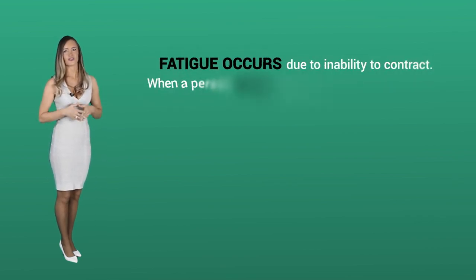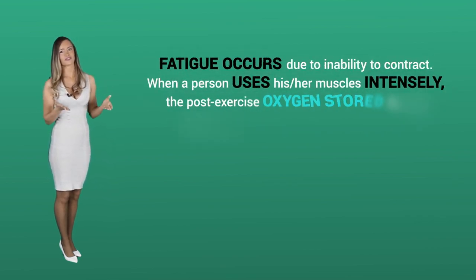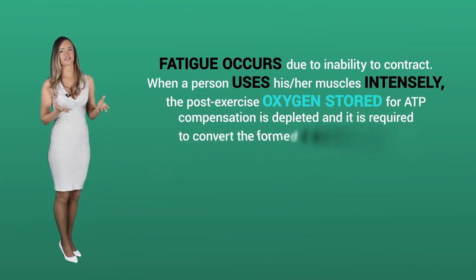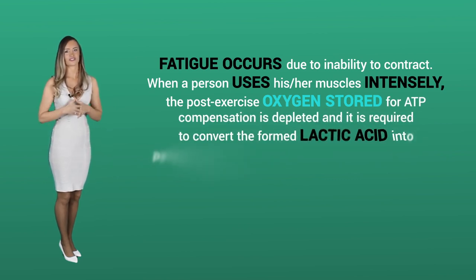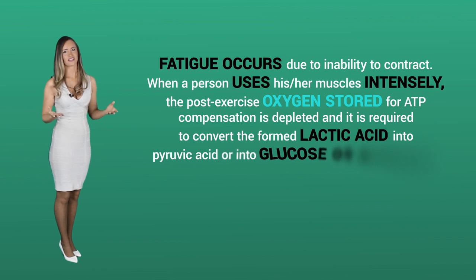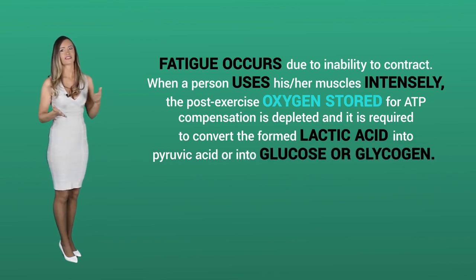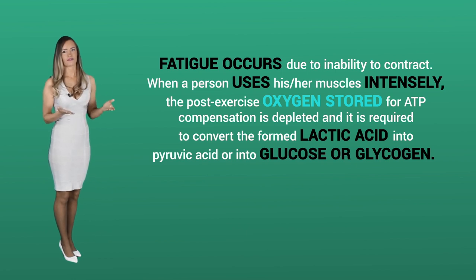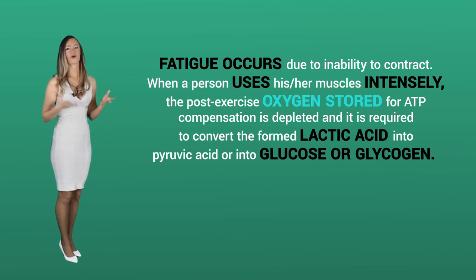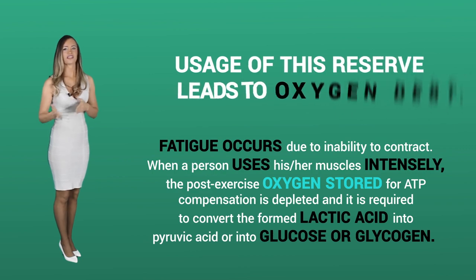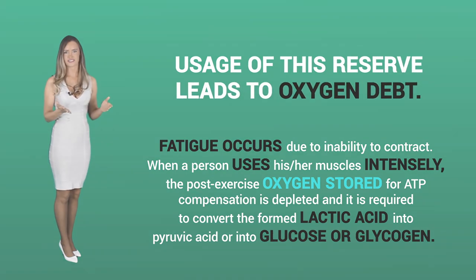Fatigue occurs due to the inability to contract. When a person uses his or her muscles intensely, the post-exercise oxygen stored for ATP compensation is depleted. It is required to convert the formed lactic acid into pyruvic acid, or into glucose or glycogen. Usage of this reserve leads to oxygen debt.